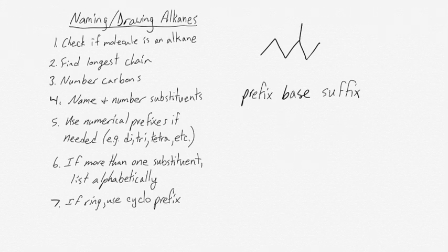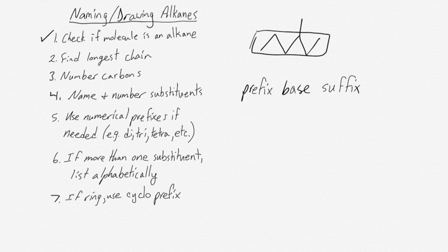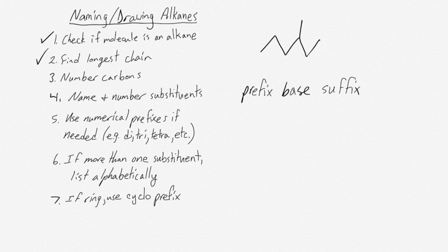Our second example is only slightly more complicated, but we will need to follow more of the checklist to name it. First we check if it's an alkane — we have all single bonds, so it definitely is. The next thing we do is find the longest carbon chain, which is still six carbons long. Then we number the carbons. Because we have a substituent, this is actually important now. We have two ways we could number our longest carbon chain: we could start from the left or we could start from the right.